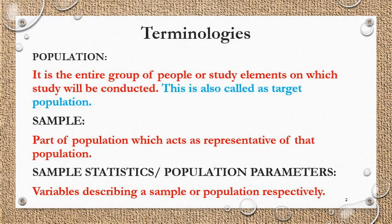A quick review of terminologies. What is population? It is the entire group of people or study elements on which a study will be conducted. This is also called the target population. For example, if we want to know the prevalence of Corona cases in Indore district, the population of Indore will be the population under study.